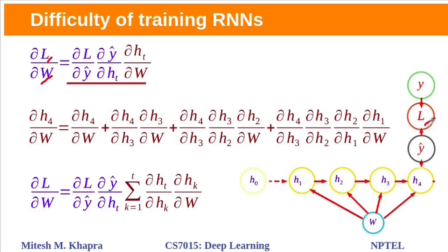So partial derivative of loss function with respect to w will be this one. Loss L depends on predicted value y hat. Y hat depends on hidden state. This hidden state depends on this w. So first we need to take the partial derivative of loss function with respect to y hat, then partial derivative of y hat with respect to ht, partial derivative of ht with respect to w. Let us concentrate on this last term.